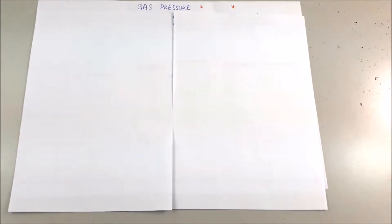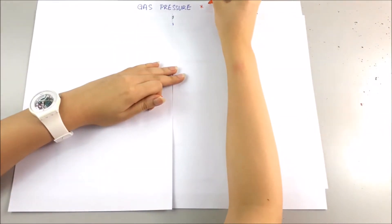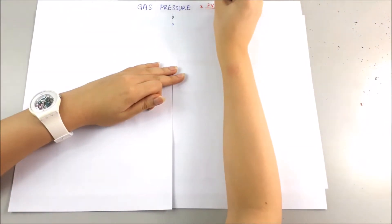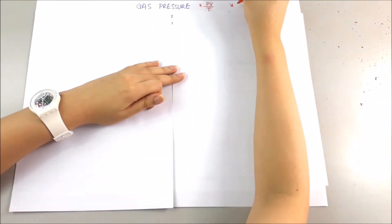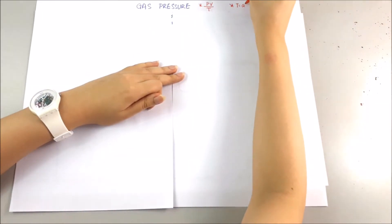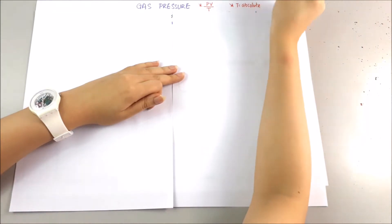Hello, guys. So today we will talk about gas pressure. Before we start, there's an equation for gas pressure, which is pressure times volume over temperature, where the temperature is absolute temperature.